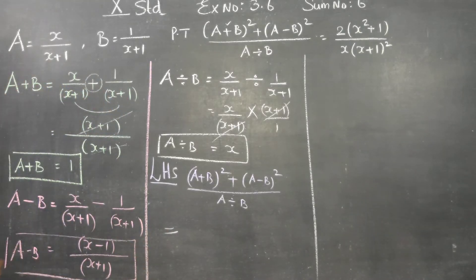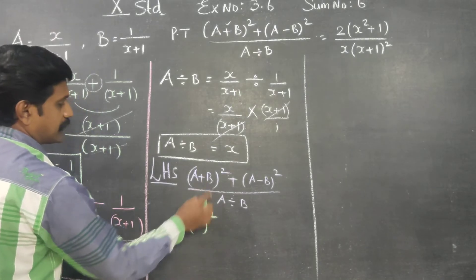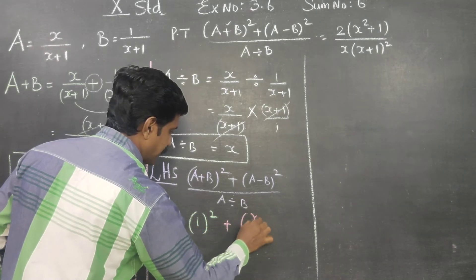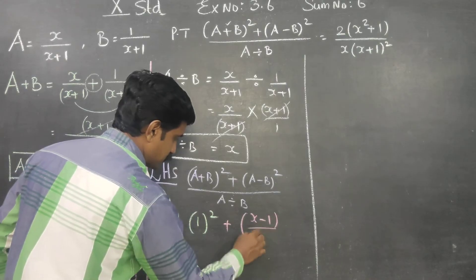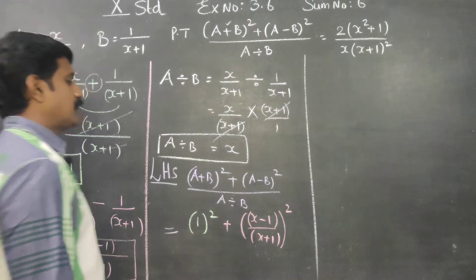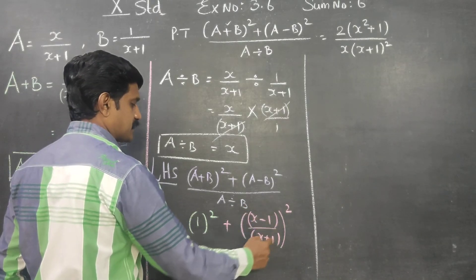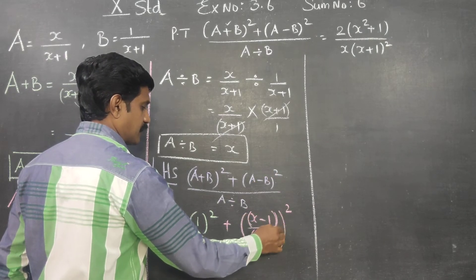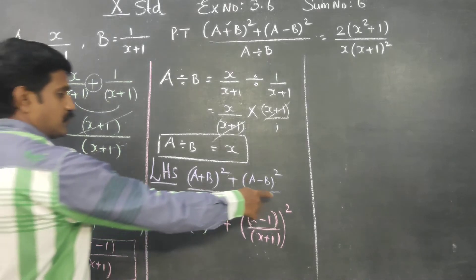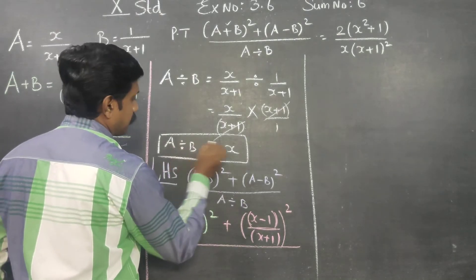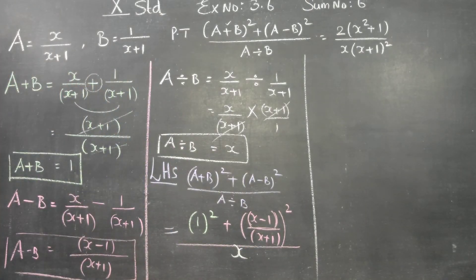What is my a plus b whole square? A plus b is 1. What is a minus b? A divided by b — the answer is x.